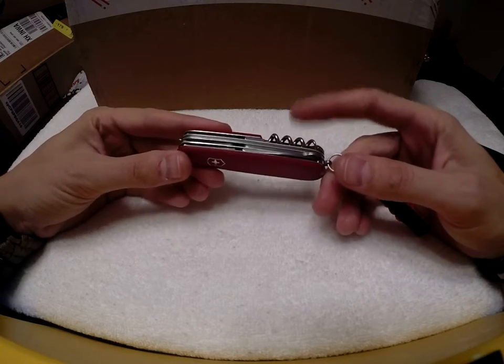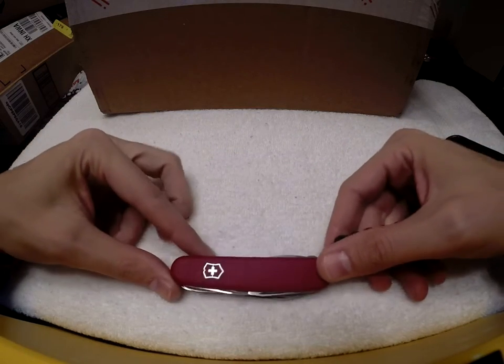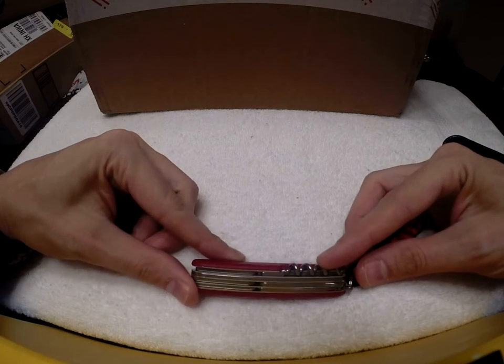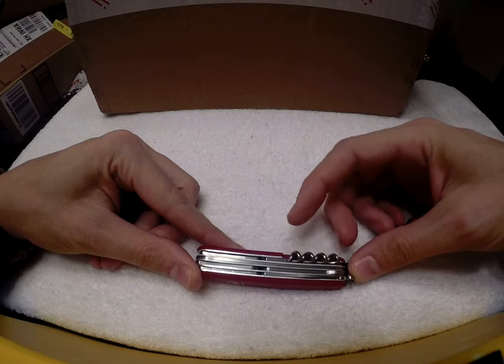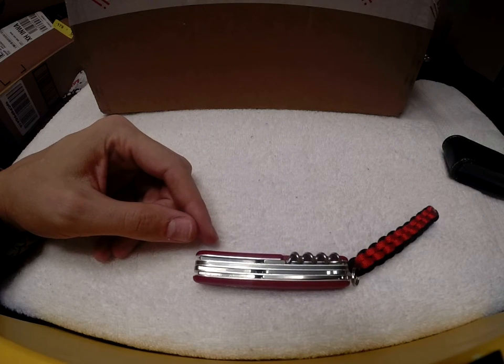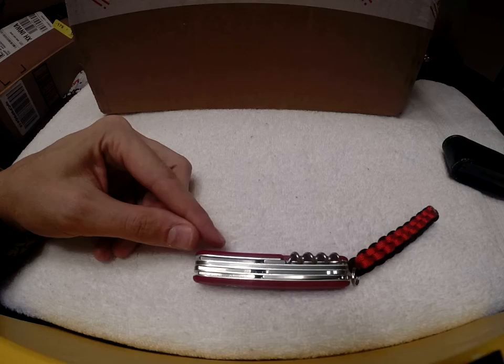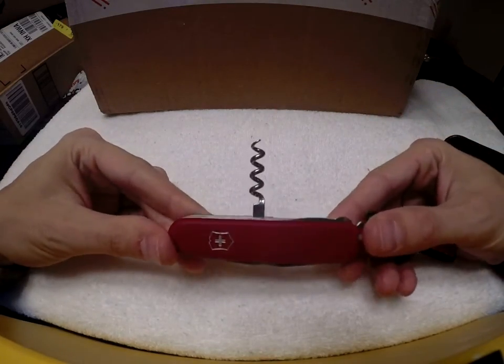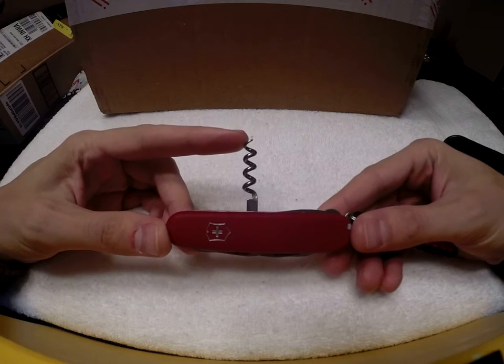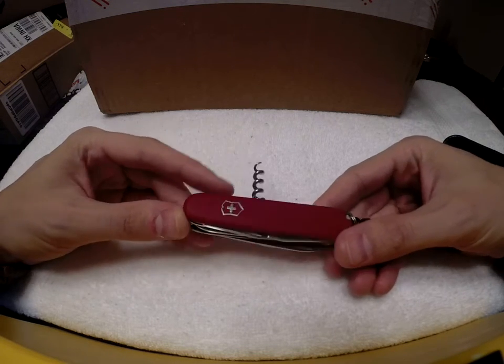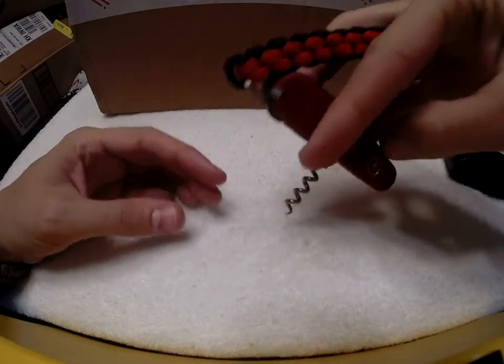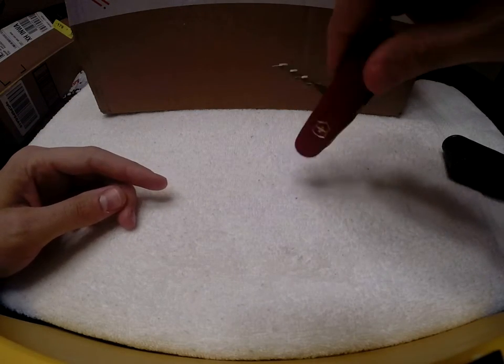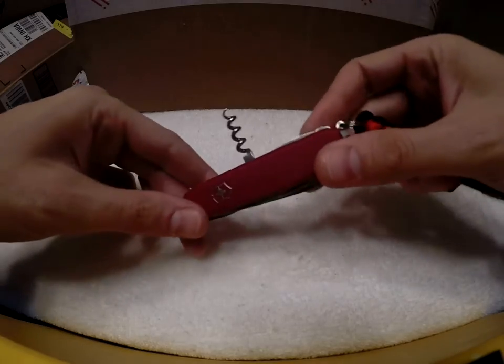There is another one. This is the Huntsman 2. There is the regular Huntsman. The only difference is this has a corkscrew, whereas on the Huntsman, the corkscrew has been replaced with a Phillips screwdriver.